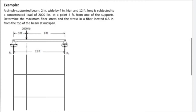We have a simply supported beam with a hinge at R1 and a roller at R2. There is a 2,000-pound concentrated load at a point 3 feet from support 1, and the total length of the beam is 12 feet. Let's find the reactions first.